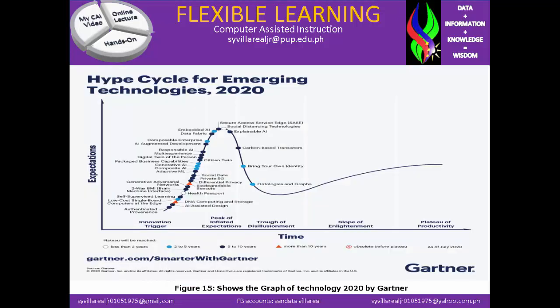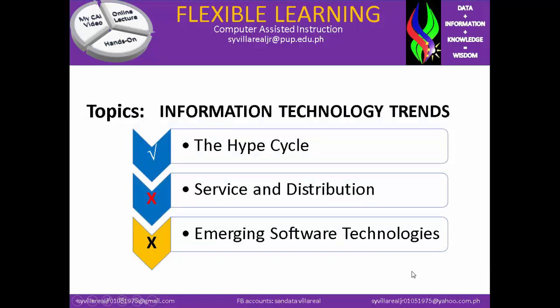Figure 15 shows the graph of technology 2020 by Gartner. You will notice the timeline for the hype cycle for emerging technology and its expectations. Now we are finished with the hype cycle.